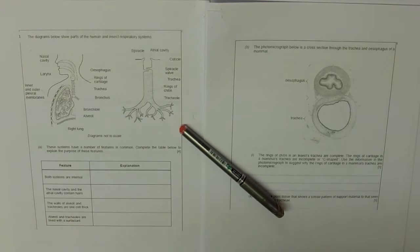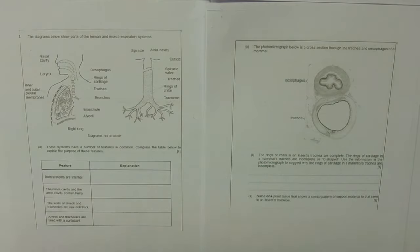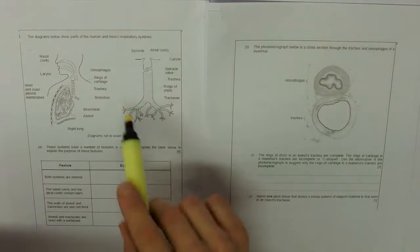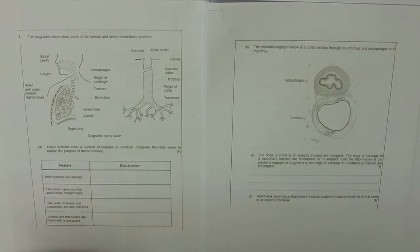So this is the lower sixth component three in-class question book. Question one starts off with gas exchange, and we can see human and insect respiratory systems. The insect one is pretty straightforward.